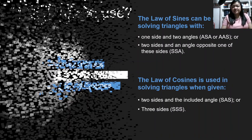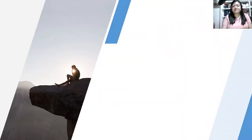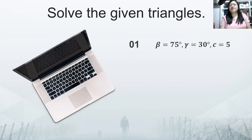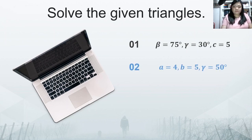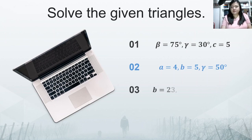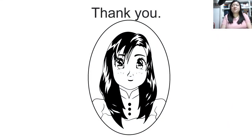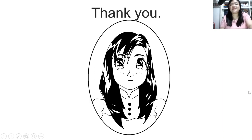In our next video, we are going to answer the following practice problems: solve for the unknown in the given triangles. Number one: beta is 75 degrees, gamma is 30 degrees, and C equals 5. Number two: A is 4, B is 5, and gamma is 50 degrees. Number three: B is 23, C is 35, and alpha is 120 degrees. Number four: alpha is 115 degrees, beta is 13 degrees, and A equals 26.3. Thank you for watching this math lesson video on the law of cosines and law of sines. See you on our next lesson video. Thank you, keep safe, and stay healthy. See you soon.